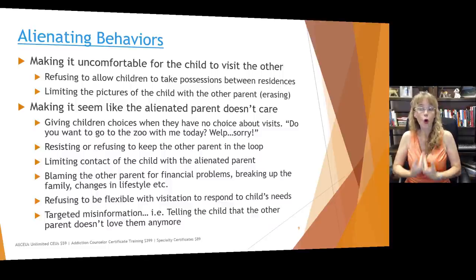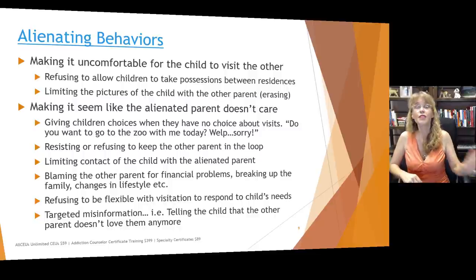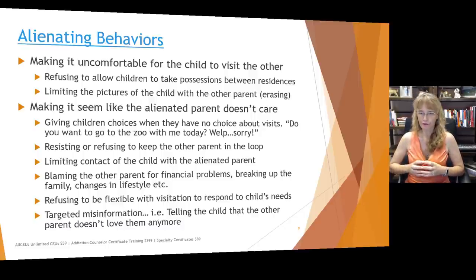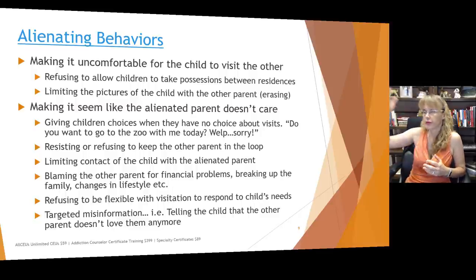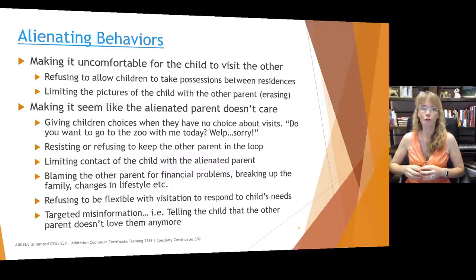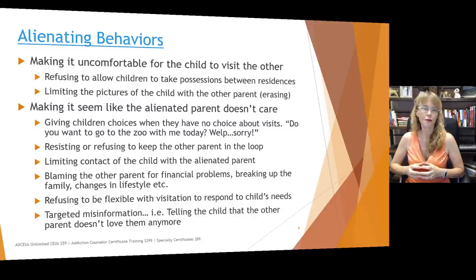They may blame the other parent for their own financial problems, the breakup of the family, or changes in lifestyle — 'if your parent had loved you, they wouldn't have done this, which caused us to get divorced.' They may refuse to be flexible with visitation to respond to the child's needs, refusing to allow vacations or activities unless certain demands are met. They may also simply provide targeted misinformation — telling the child the other parent doesn't love them anymore, then finding 'evidence' to support that.